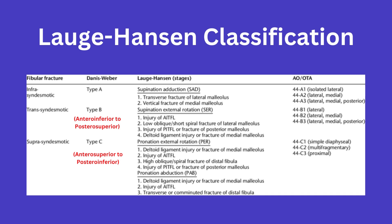Finally, the pronation abduction category can include a transverse comminuted fracture of the fibula above the level of the syndesmosis, and again this would match up with the Weber C fracture pattern.